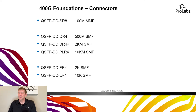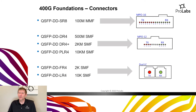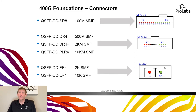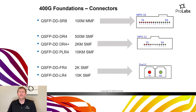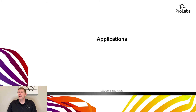As a summary of connectors for 400 gig transceivers: the SR8 uses MPO-16 with eight transmit/eight receive pairs; the DR4, DR4+, and PLR4 use MPO-12 with four transmit/receive pairs — similar to the scheme used in QSFP+ and QSFP-28 modules for years; and the QSFP-DD FR4 and LR4 use standard duplex LC connectors.